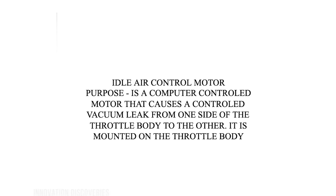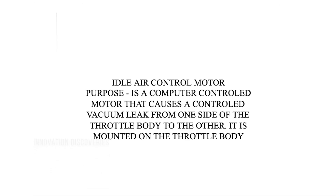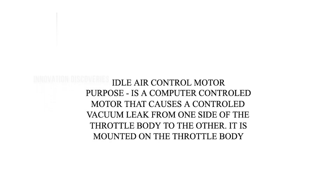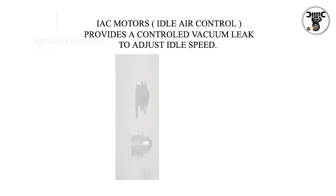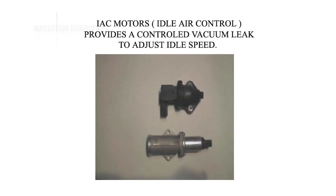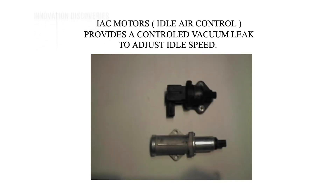Idle air control motor purpose: is a computer-controlled motor that causes a controlled vacuum leak from one side of the throttle body to the other. It is mounted on the throttle body. The IAC motor provides a controlled vacuum leak to adjust idle speed.